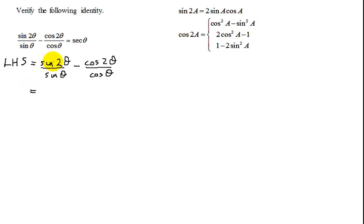So let's start with the first expression. The sine of 2 theta, that's the easier one. It has just one version. The sine of 2a is 2 sine a cosine a. So the sine of 2 theta is 2 sine theta cosine theta. And I'm going to divide that by sine theta.